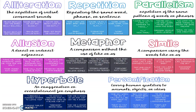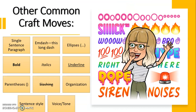So those are the most commonly seen craft moves, but I wanted to make a list of some other ones that we use in class: the single sentence paragraph, the em dash — that long dash (to use that you just click the dash button two times, type whatever letter you're going to use, then press the space button and it makes it long) — and ellipses, that's what we call the dot dot dot, using bold, italics, or underline, throwing in some parentheses, slashing (I've only ever seen this used in the Shatter Me series, but I think it's really cool), organization, sentence style, unique voice and tone. These are all things that we in class have seen and used in our writing to kind of jazz it up.